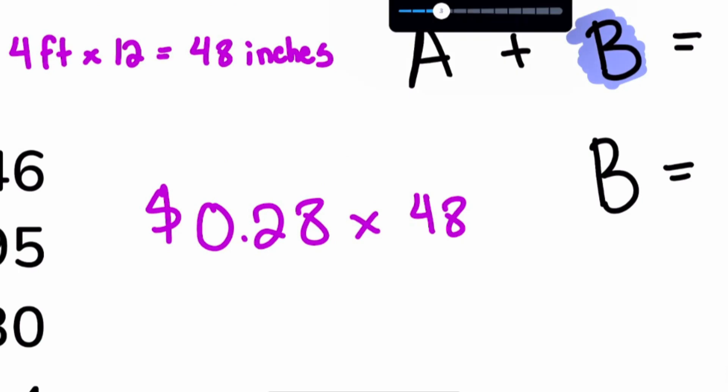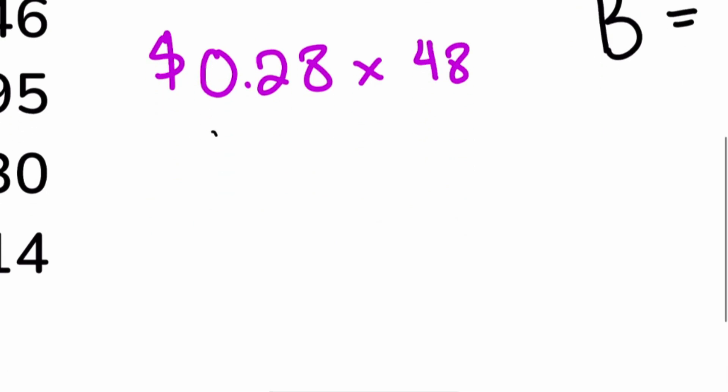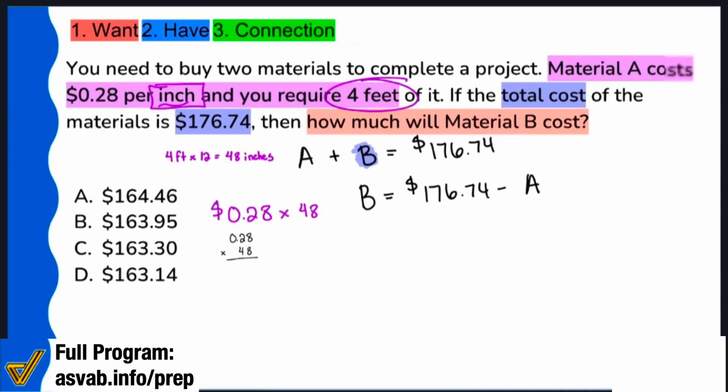Now that we have that, that's what we'll be multiplying by 48. Let's give myself a little more room with this pen here and let's do the multiplication. So we have 0.28 multiplied by 48.